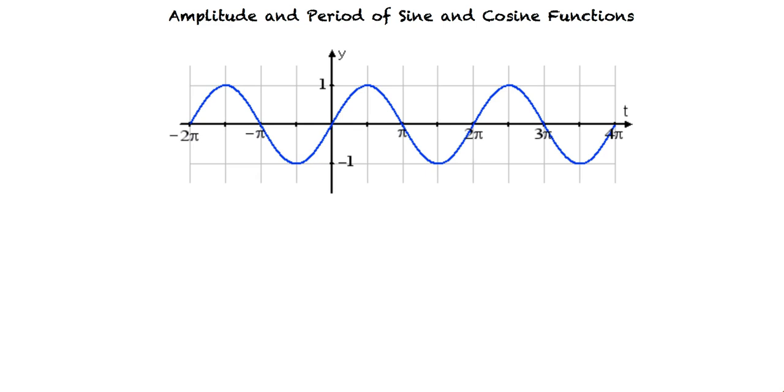If we have a function of the form y equals a sine bx or y equals a cosine bx, the amplitude is the absolute value of a. This value tells us the largest possible y value of the equation and it is half the distance between the maximum and minimum values of the function.